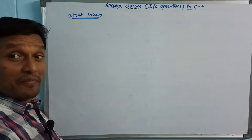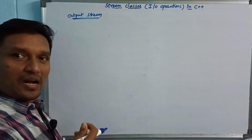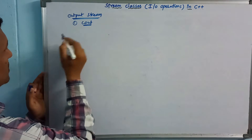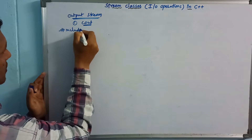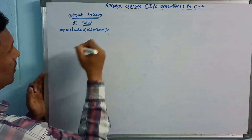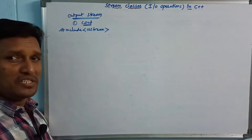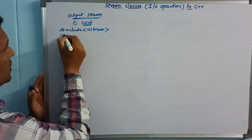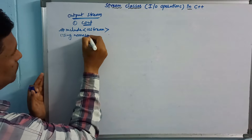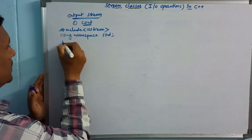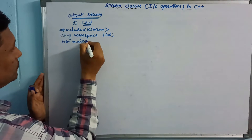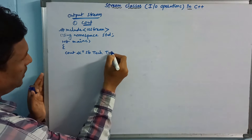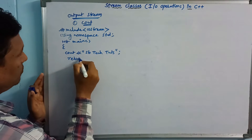Iostream is used for output. When we include the iostream header file, we include all functions and objects. Using namespace std. In main, we use cout to display output — for example, cout << "SB Tutes"; return 0.